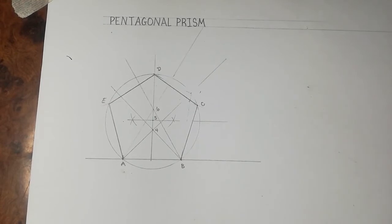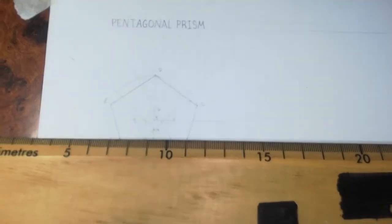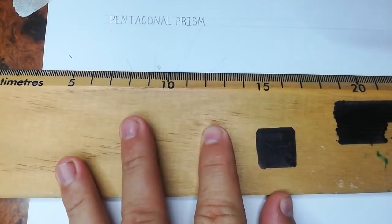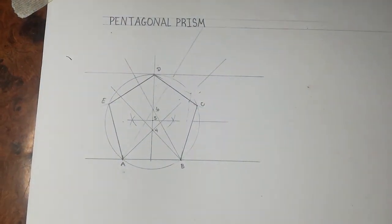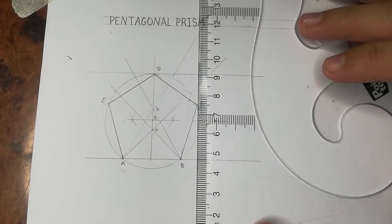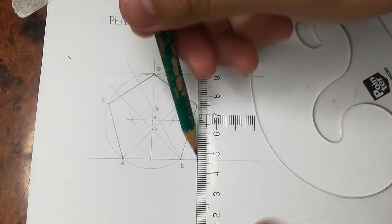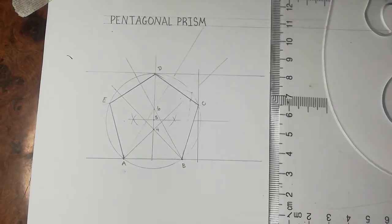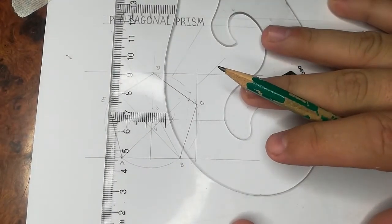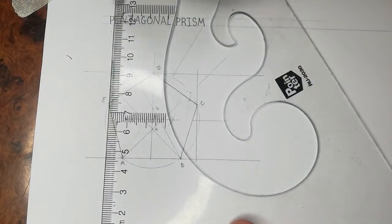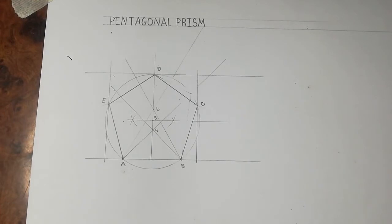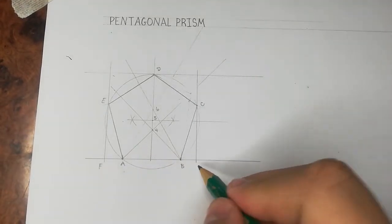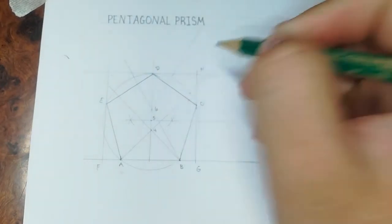So you take your T-square to the highest vertex of your pentagon and draw a horizontal line. Do the same for the left and right, we draw vertical lines at C and at E. We will call this rectangle F, G, H, and I. Having all of this here, we can now begin our pentagonal prism.